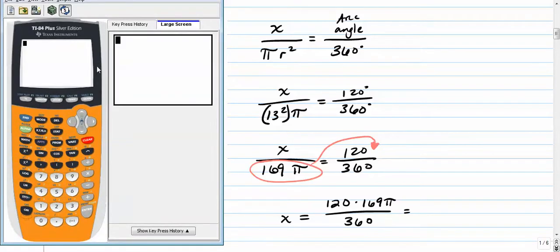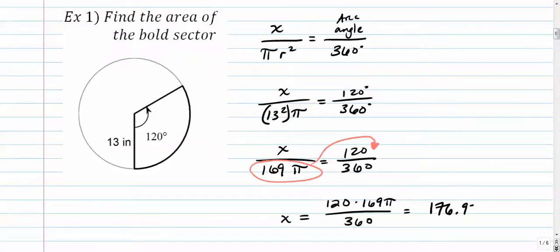We get x is equal to 120 times 169 pi over 360. And now it's totally fine to go to your calculator. As I said, you can simplify the 120 and the 360 to be one third, but since that doesn't always work, I'm not going to do that now. I'm going to go 120 times 169, hit my pi button, divide that by 360. Some calculators are different in terms of syntax. It's never a bad thing to put parentheses. The answer is 176.976 square inches.